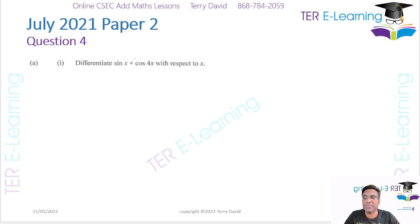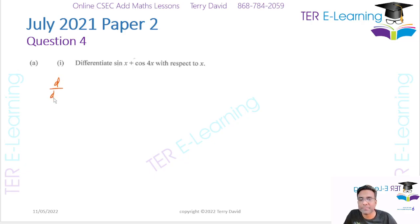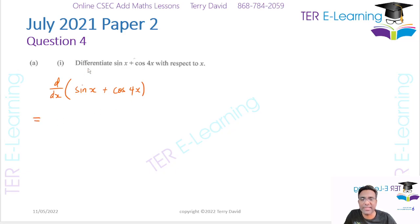So in question 4 here we want to perform a differentiation. We want to differentiate sine x plus cosine 4x. That's what we want to differentiate. So to differentiate this, we're going to differentiate each part separately.